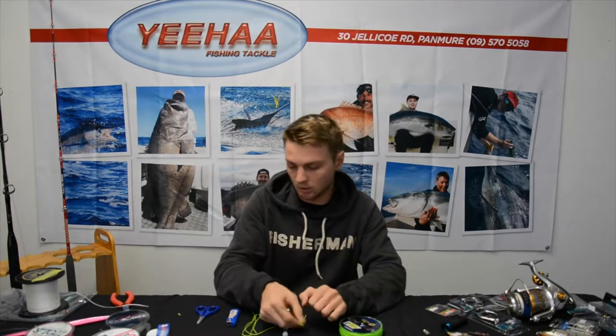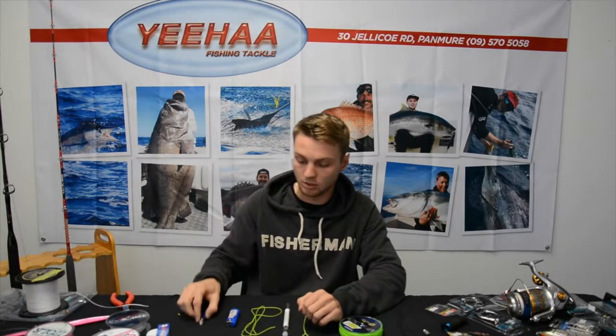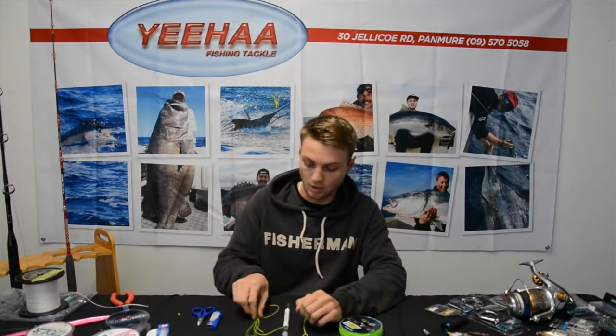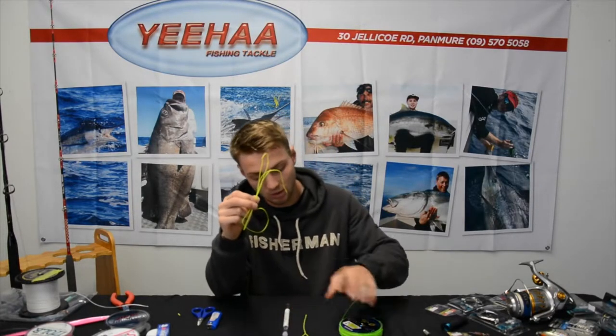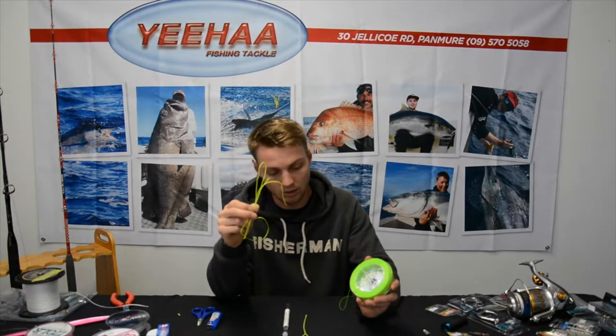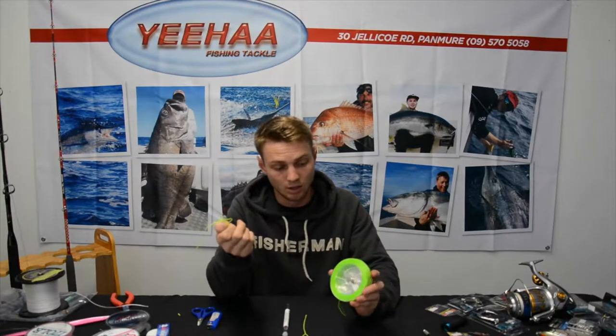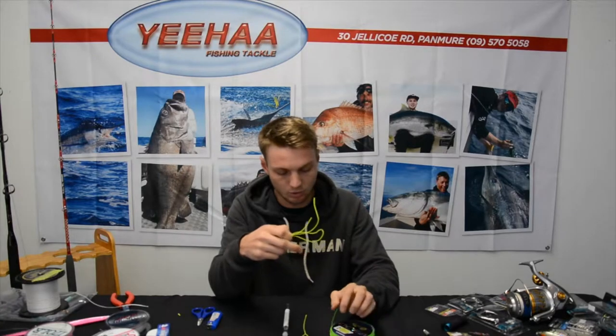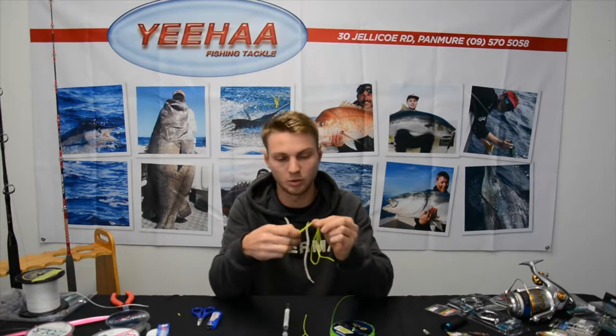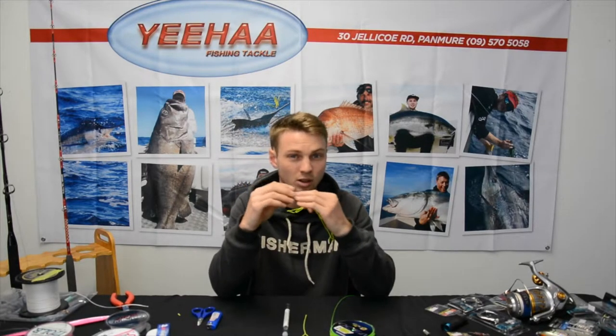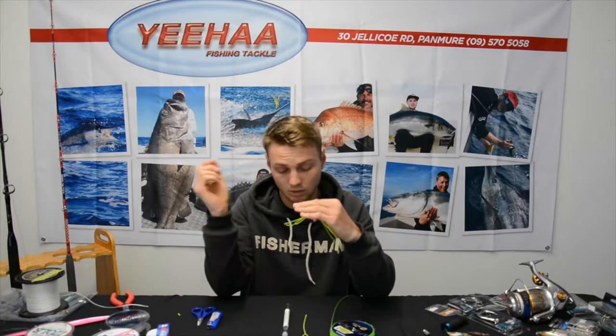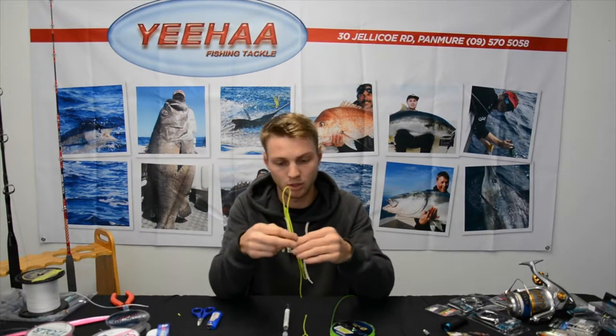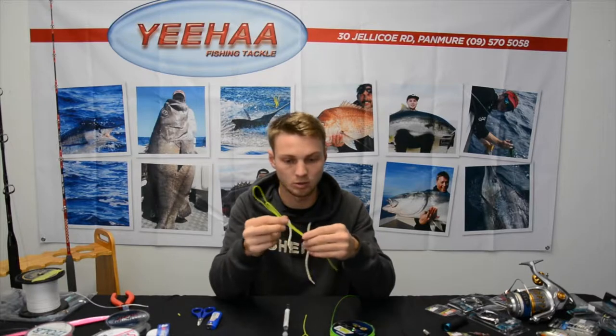So to make these, basically you'll need a pair of scissors, bider, you'll need some Dacron, depending on the size of the line that you're going to be using, depends on the size of the Dacron. Today I'm doing it with 80lb mainline. When fishing with 80lb you can actually use 50lb Dacron, so it's got a really nice tight lock on the mainline so it doesn't slide too much. Then I'll also show you how to lock it in place. So for today I'm using 50lb Dacron.